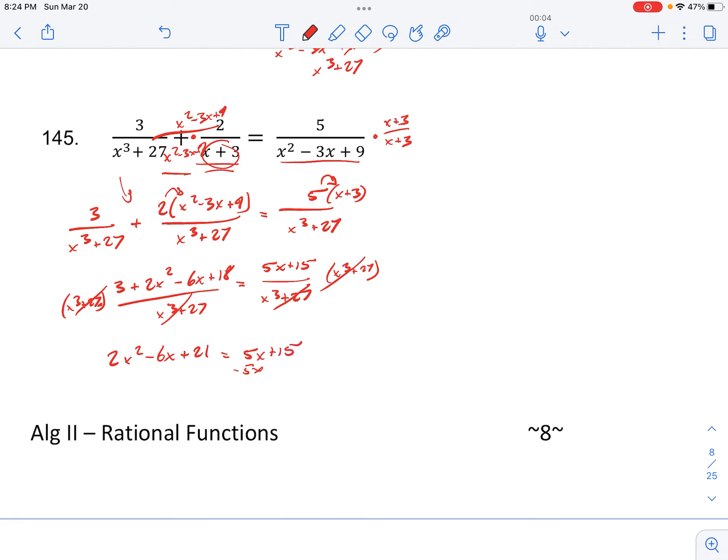Subtracting 5x and subtracting 15, so subtracting 5x and 15, we're left with 2x squared minus 11x plus 6 is equal to 0.